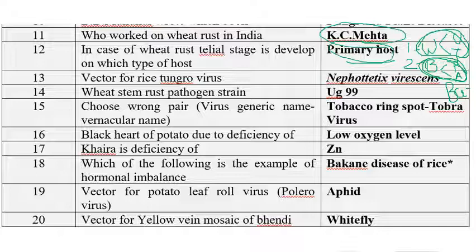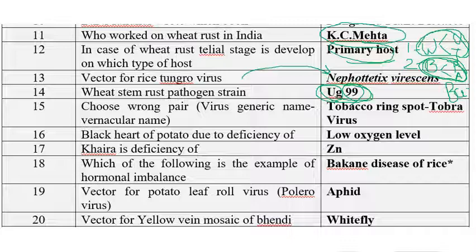The vector for rice tungro virus is the green leafhopper, that is Nephotettix virescens. The strain of wheat stem rust pathogen is Uganda 99 — Ug99 stands for Uganda, 99 for the year 1999. Among the given pairs, which is the wrong one: tobacco ringspot virus paired with Tobravius — that is the wrong pair.